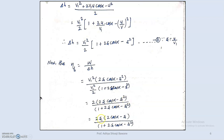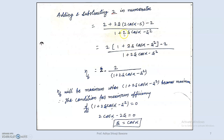Taking s as common in the numerator: efficiency equals 2s(cos alpha − s) divided by (1 + 2s cos alpha − s squared). To simplify further, adding and subtracting 2 from the numerator and rearranging: efficiency equals 2 minus 2 divided by (1 + 2s cos alpha − s squared).